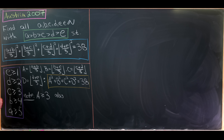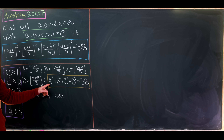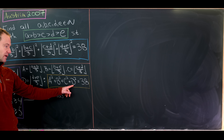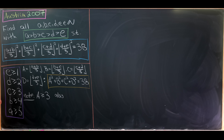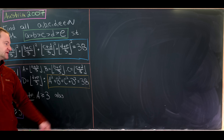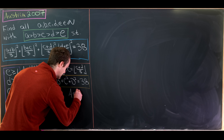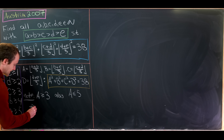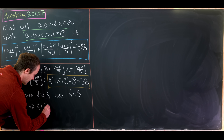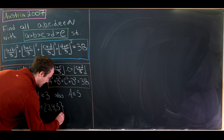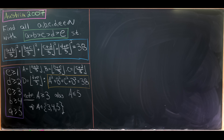If capital A were 6, the remaining squares B² + C² + D² would need to sum to 2. But since E ≥ 1 and D ≥ 2, the smallest possible value of capital D is already at least 1, so that would exceed 38. So capital A ≤ 5, and putting this together, capital A must come from the set {3, 4, 5}.